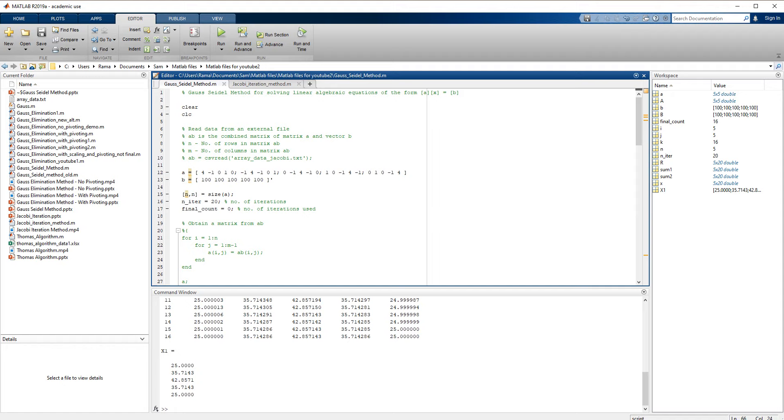And the right-hand side vector B is given here and N is the number of rows or columns and the number of iterations, the total number of iterations is set to 20 as before.